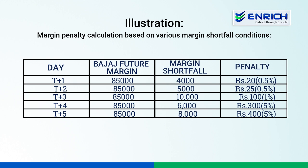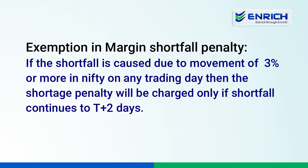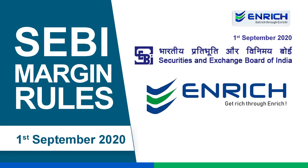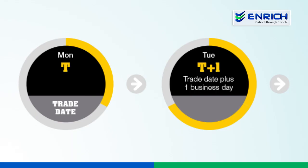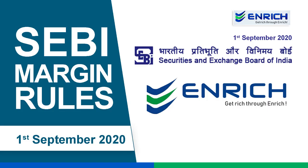There is also an exemption in margin shortfall penalty. If the shortfall is caused due to a movement of 3% or more in Nifty on any trading day, then the shortage penalty will be charged only if the shortfall continues to T+2 days. According to SEBI's latest circular on margin shortfall, it is mandatory to collect the MTM losses for T-day positions on T+1 day from the clients. Failing which, the same will be considered as margin shortfall and the penalty is levied as per the percentages set before.